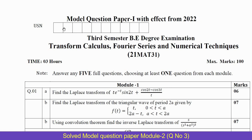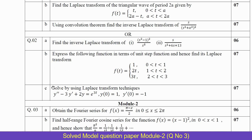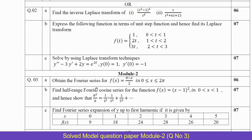Hello everyone, I welcome you all to SVK Tutorials. In this video I am going to discuss the scheme and solution for Model Question Paper 1 for the third semester B degree examination, subject: Transform Calculus, Fourier Series and Numerical Techniques, subject code 21MAT31. As I have already discussed Module 1, I am now going to discuss the Module 2 questions.